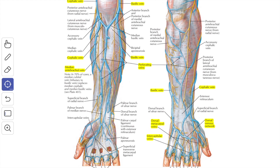The front of the forearm is supplied by the lateral cutaneous nerve of forearm and the medial cutaneous nerve of forearm, assisted by the palmar branches of the median nerve and ulnar nerve close to the wrist. The back of the forearm is supplied by the posterior cutaneous nerve of forearm, assisted by the medial cutaneous nerve of forearm and lateral cutaneous nerve of forearm.